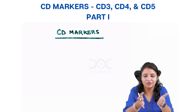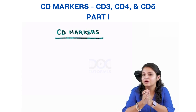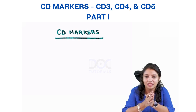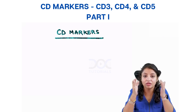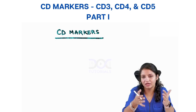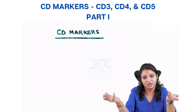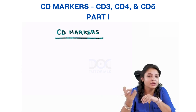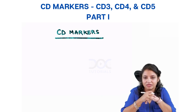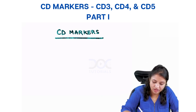When we talk about CD markers, there is a simple clue to remember. Any number which is less than 9 is usually a T cell marker, and usually more than 19 are B cell markers. Here is the catch point that we should remember.